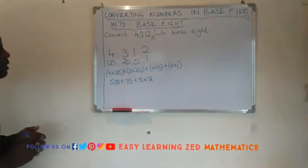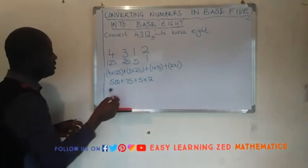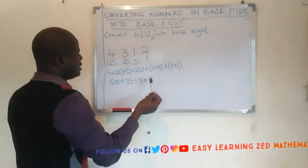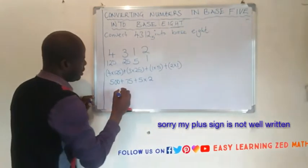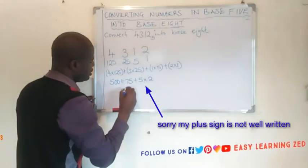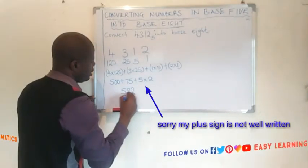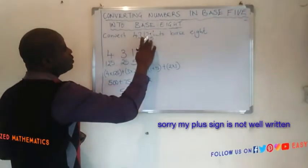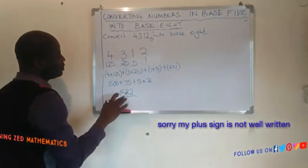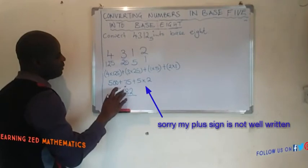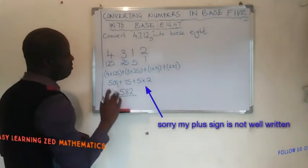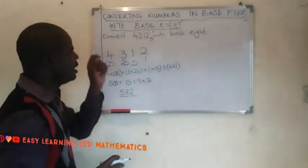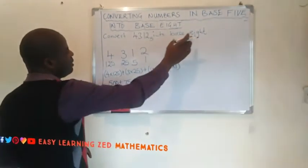Now we add the products: 500 plus 75 is 575, plus 5 is 580, plus 2 is 582. So 4312 base 5 is equal to 582 in base 10. Now let's convert this number into base 8, because we are asked to give the value in base 8.